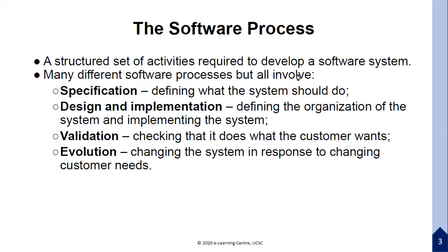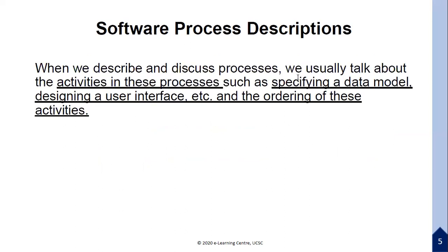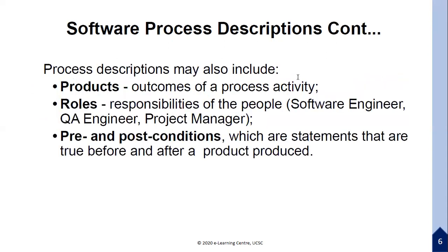A software process model is an abstract representation of a process — it represents a description of a process from a particular perspective. When we describe and discuss processes, we usually talk about the activities in these processes, such as specifying a data model, designing a user interface, and so on, and the ordering of these activities.